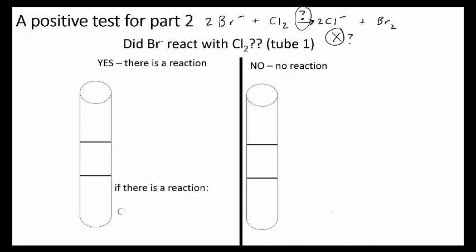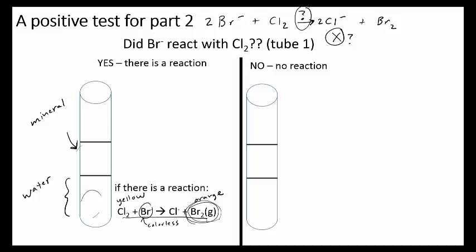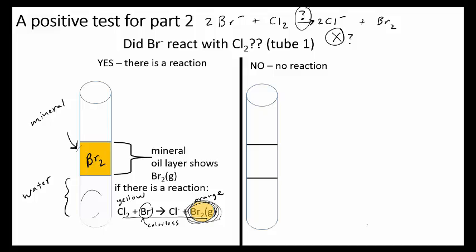If there is a reaction, you'll actually see: the chlorine here is yellow and the bromine product is orange. The mineral layer is less dense than water, so it rises to the top. The bromide ions are colorless. So you'll see it go from yellow to orange in the mineral oil if there is a reaction. The reason we know a reaction happened is because Br2, which is orange, shows up there.